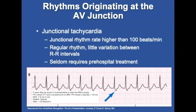Junctional tachycardia is accompanied by a rate exceeding 100 beats per minute. The rhythm is regular with little variation between R-on-R intervals. It is uncommon in adults but associated with acute coronary syndrome, heart failure, or digoxin toxicity. Because the rate is fast enough to maintain cardiac output, it seldom requires prehospital treatment. If the rate exceeds 150 beats, cardiac output could suffer. At rapid ventricular rates, distinguishing junctional tachycardia from another narrow QRS tachycardia can be difficult; if the patient is symptomatic, treat in accordance with the tachycardia algorithm.